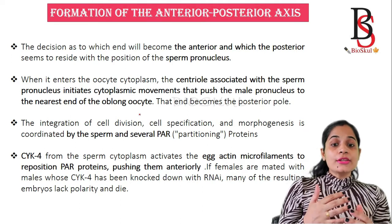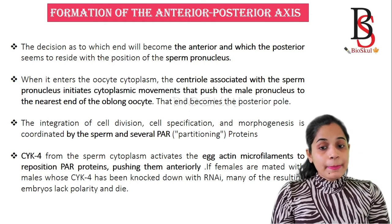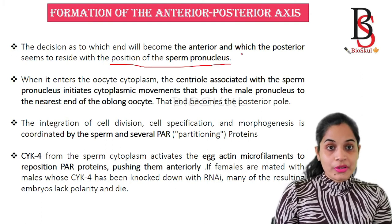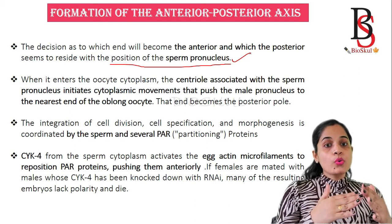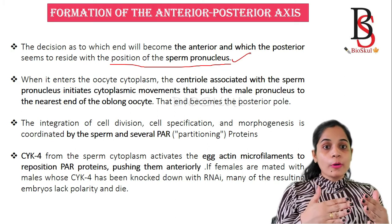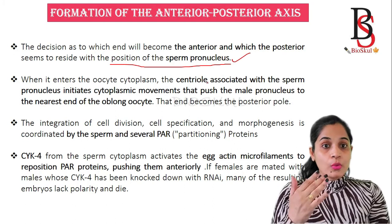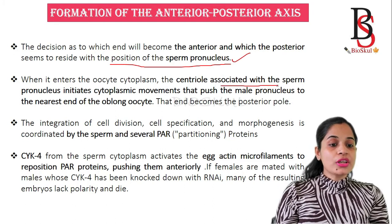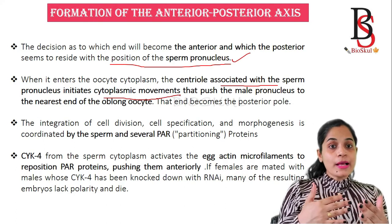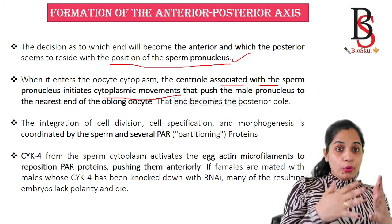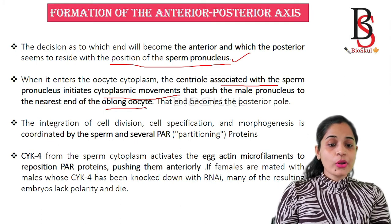Now we'll see the formation of the anterior and posterior axis of C. elegans. The decision as to which end will be anterior and which will be posterior depends on the position of the sperm pronucleus. When it enters the oocyte cytoplasm — and in C. elegans the sperm enters the egg on the posterior side — the centrosome associated with the sperm pronucleus initiates cytoplasmic movement.